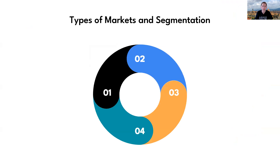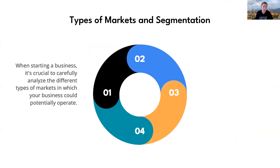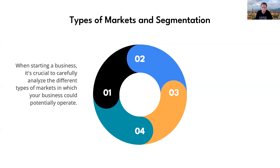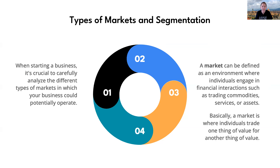We're going to talk about types of markets and segmentation. When starting a business, it is crucial to carefully analyze the different types of markets in which your business could potentially operate. A market can be defined as an environment where individuals engage in financial interactions, such as trading commodities, services, or assets — basically anywhere individuals trade one thing of value for something else of value.